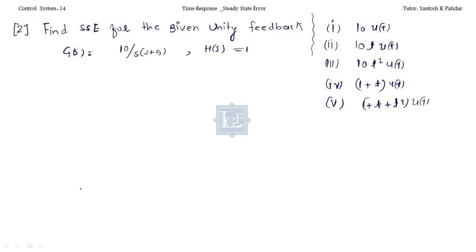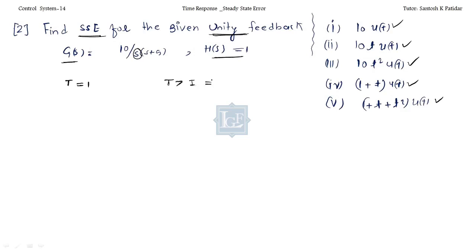Now the second problem: find steady state error for a unity feedback system with G(s) = 10/[S(S+5)], for multiple inputs. The type of this system is 1. The key rules are: if type > input, error = 0; if type < input, error = infinity; if type = input, error = some constant.